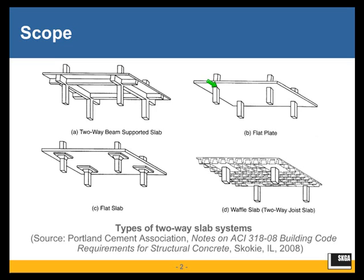To get around that problem, the slab is quite often locally thickened around the columns, creating what we call drop panels. And when a slab is equipped with drop panels, we call it a flat slab and not a flat plate anymore. This is the terminology we have used for a long time.